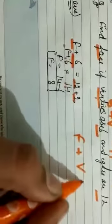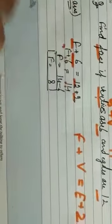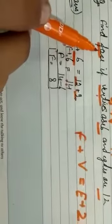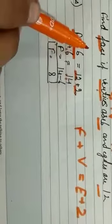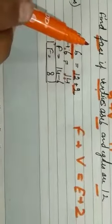So let me remind you: Euler's formula is faces plus vertices equals edges plus 2. Whenever you are given faces, vertices, or edges and need to find the missing one, you can use this formula. With this, we are completed with this chapter. Thank you for your cooperation.